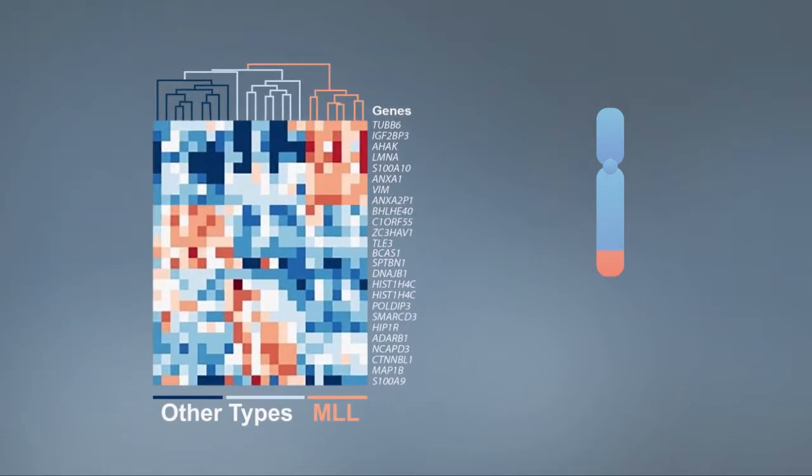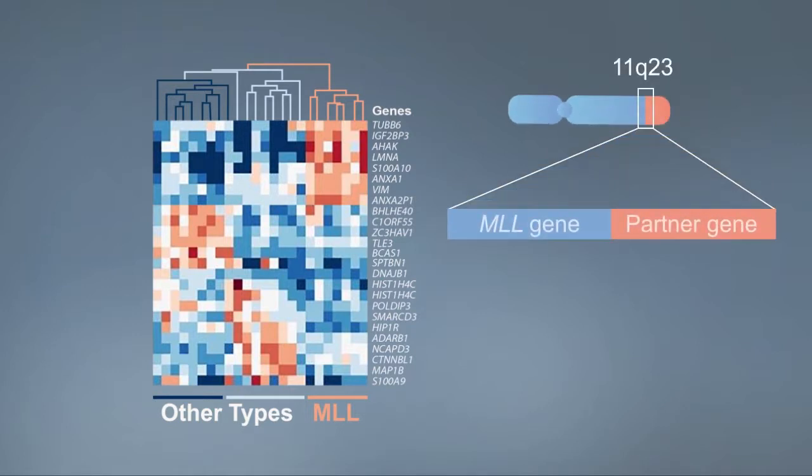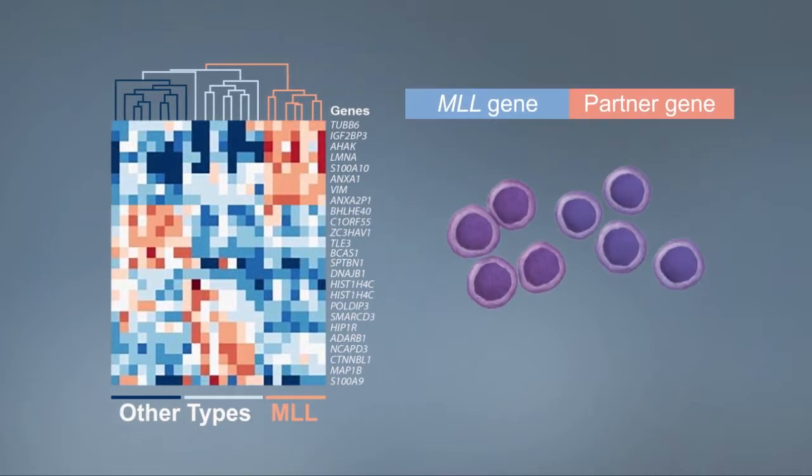As a result, the MLL gene on chromosome 11 fuses with one of its partner genes from other chromosomes, leading to an abnormal gene expression pattern and unchecked proliferation of leukemic blast cells.